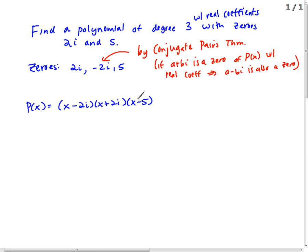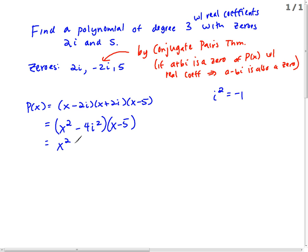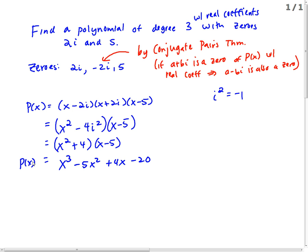We're going to expand it out. If we look at the first two sets of parentheses and combine them, we get a difference of two squares. So we get x²-4i². Since i²=-1, that becomes x²+4. Then multiplying by (x-5): x³-5x²+4x-20. Check me — is that right?